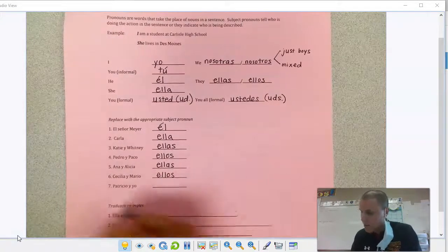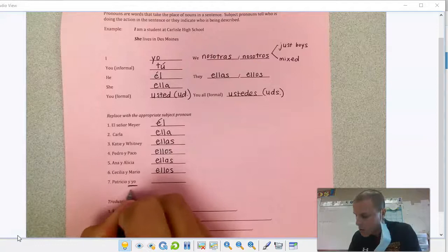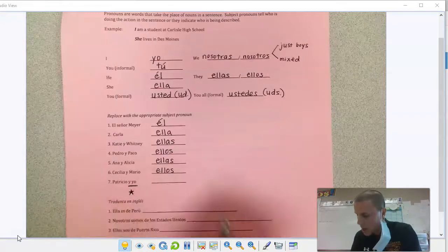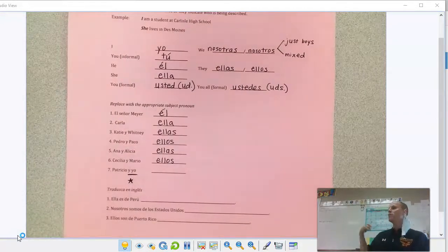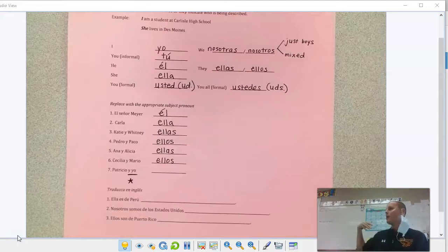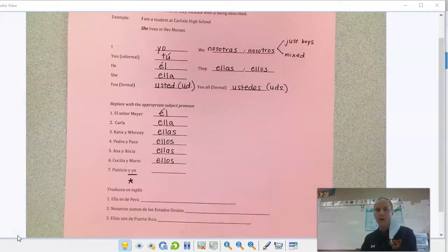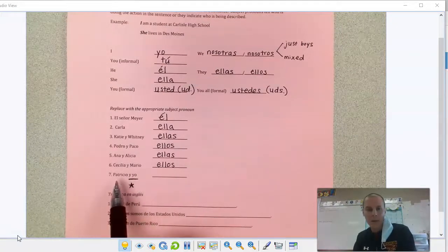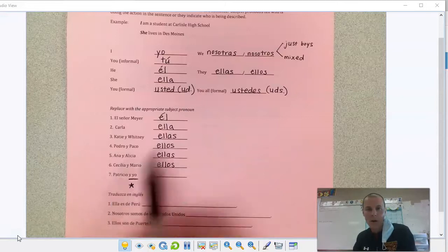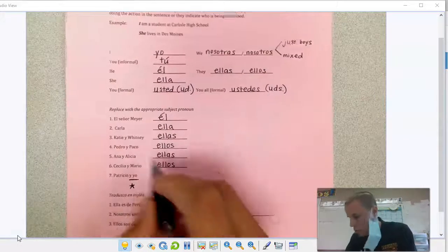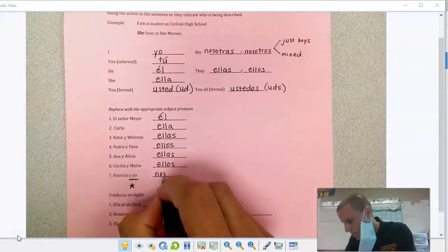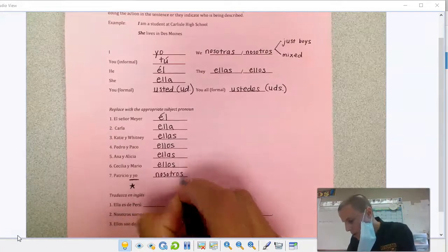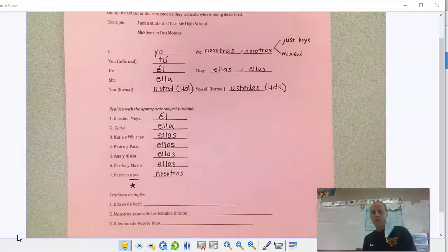Seven's a little different. I'm going to underline 'and I.' If you see anybody and I, that 'and I' is super important. You're trying to say we. Since Patricio is another boy here, I would use nosotros because we're saying we.